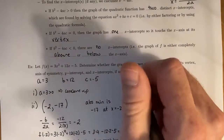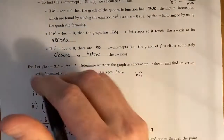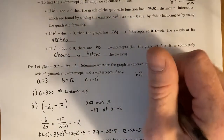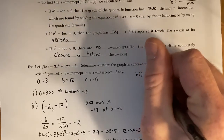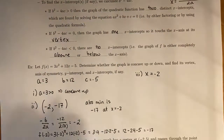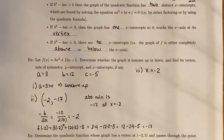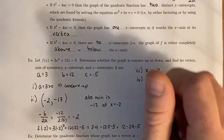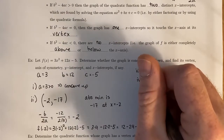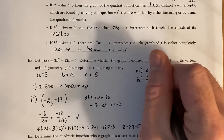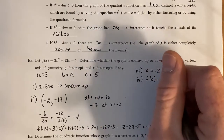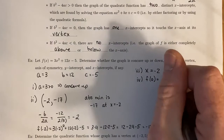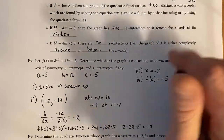For the axis of symmetry — the vertical line that passes through the vertex — that is x equals negative 2. Next, we want to find the y-intercept, which is where x equals 0. So we find f of 0, which gives us 3 times 0 plus 12 times 0 minus 5, which gives us negative 5. That is our y-intercept.